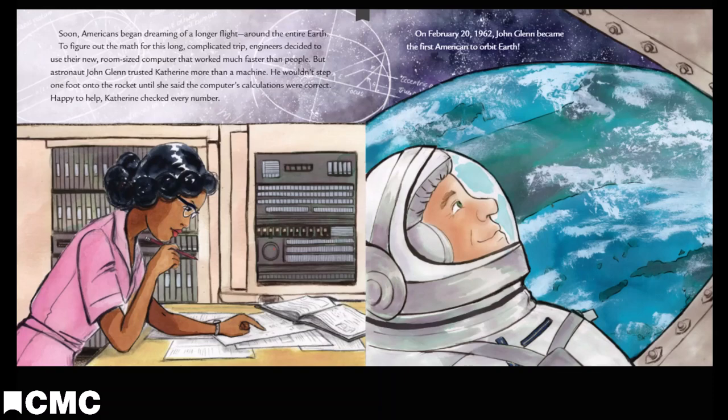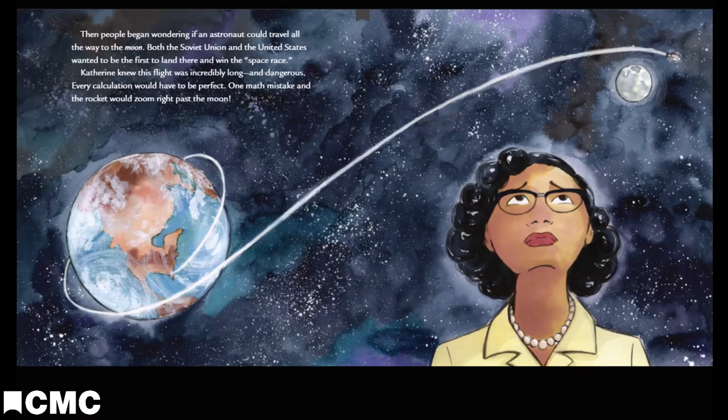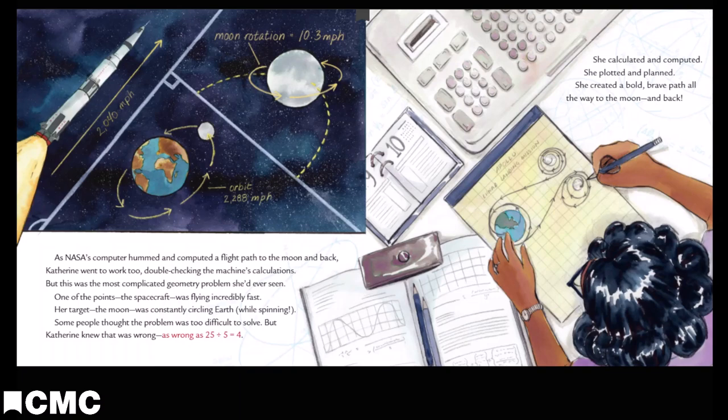Then people began wondering if an astronaut could travel all the way to the moon. Both the Soviet Union and the United States wanted to be the first to land there and win the space race. Catherine knew this flight was incredibly long and dangerous. Every calculation would have to be perfect. One math mistake, and the rocket would zoom right past the moon. As NASA's computer hummed and computed a flight path to the moon and back, Catherine went to work too, double-checking the machine's calculations. But this was the most complicated geometry problem she'd ever seen.